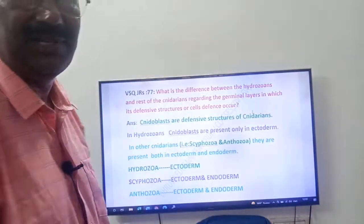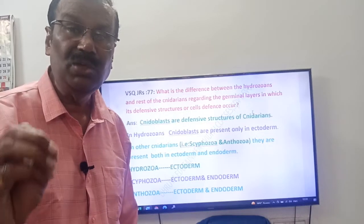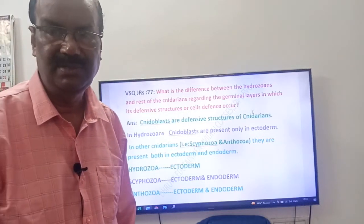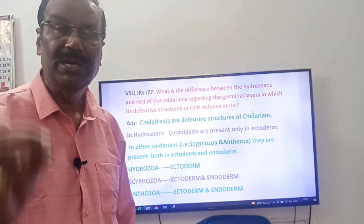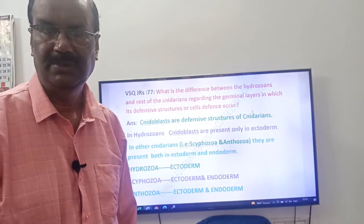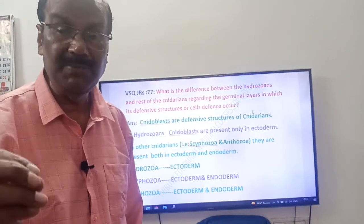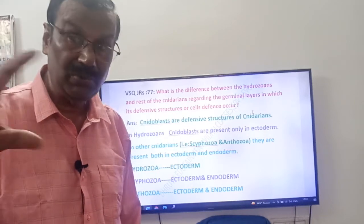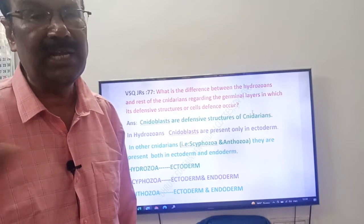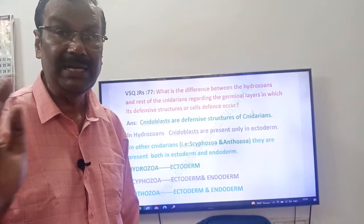Regarding the germinal layers — what are germinal layers? Cnidarians have only two germinal layers; they are diploblastic animals. Those two germinal layers are the ectoderm and the endoderm. In Cnidarians, the endoderm is also called the gastroderm. Because they have only two layers, we call them diploblastic animals.